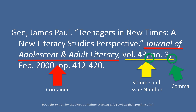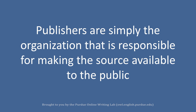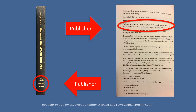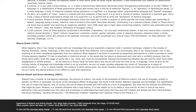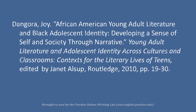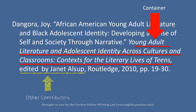Publisher. Publishers are simply the organization responsible for making the source available to the public — think book publisher. Book publishers can easily be found on the copyright page, usually on the left-hand side after the title page. You can also find book publishers on the spine, front, or back cover of a book. For web sources, the publisher could be a museum, library, university, or their department — look at the bottom of a home page or on an information page. The publisher is written out and followed by a comma so that you may continue further describing the container.